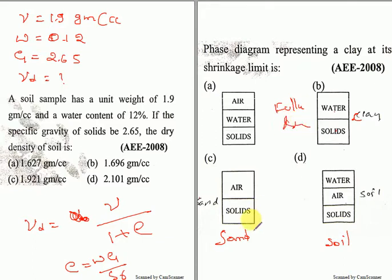The fully saturated condition, this is called the dry condition, and this is the partially saturated condition. This is a very important phase diagram — make a note of it.